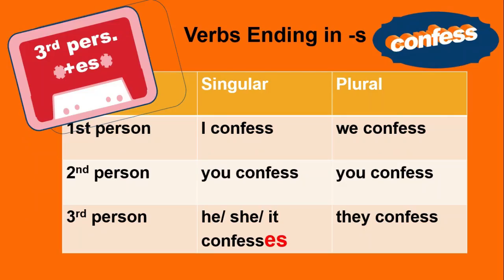Now, if we have a verb that is already ending in S, like 'confess,' things are going to change a little bit. Because in the third person singular, we're not adding only S, but we need to add ES. That is going to make the form: he/she/it confesses.